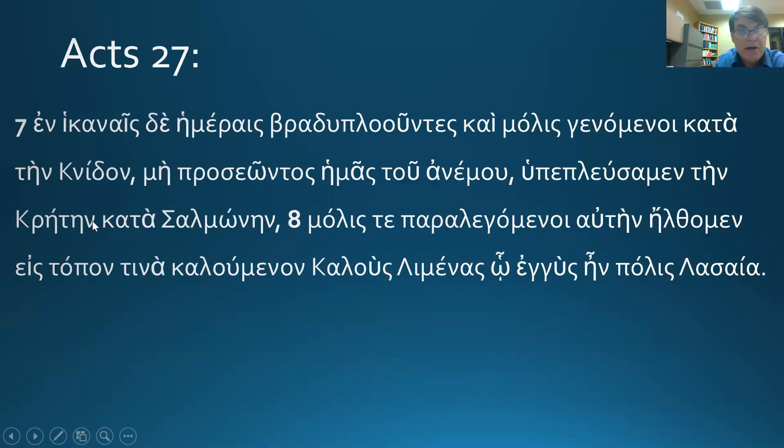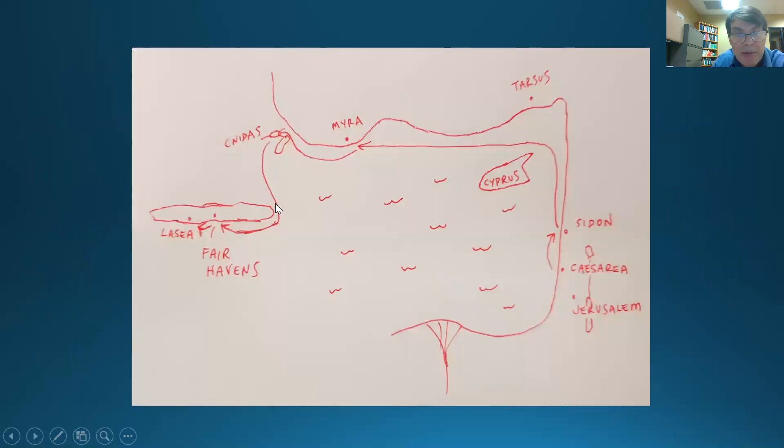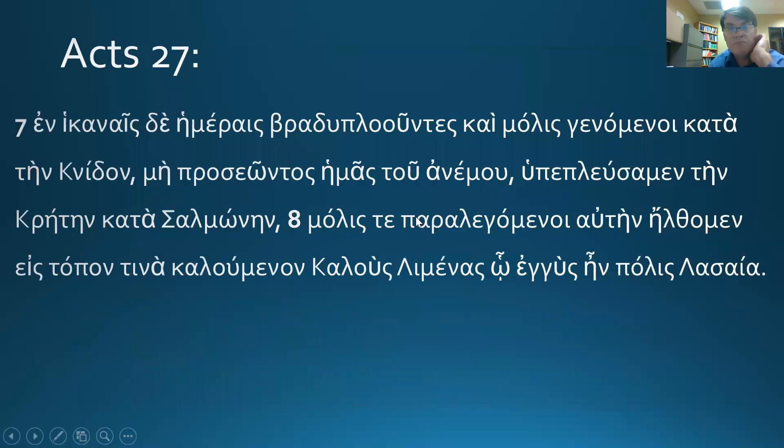We sailed under Crete against Salmone. And we don't know exactly where Salmone is. It might be an island right here. So they've sailed again the underside, the lee side, the wind must be blowing this way. The lee side of Crete is the side that the opposite side that the wind is hitting. And so this is the lee side. So they're sailing under Crete, making a mad dash down. Again, it should be more like that. And scarcely coasting along it, we came into a certain place being called Fair Havens, which is near the city of Lasea.